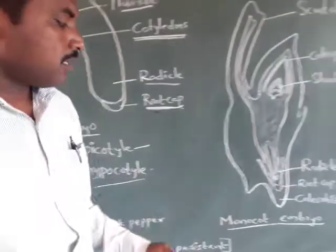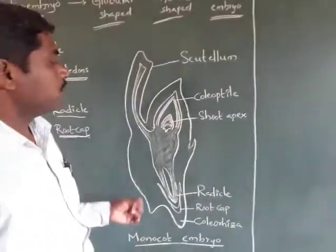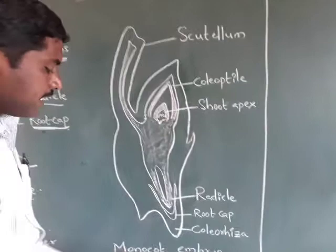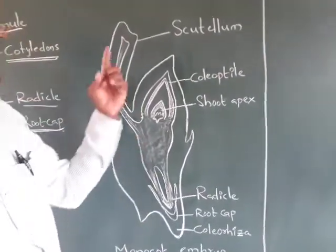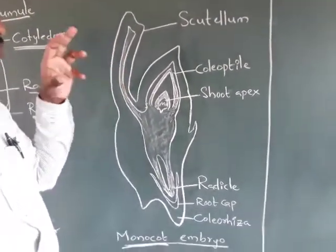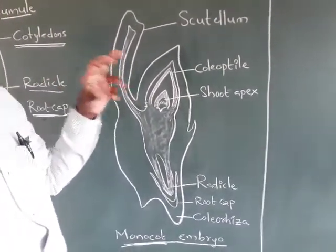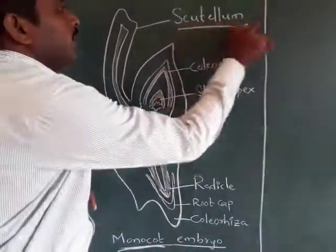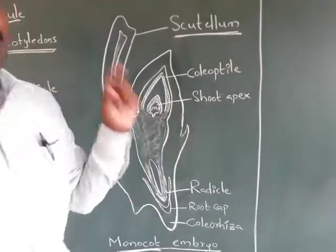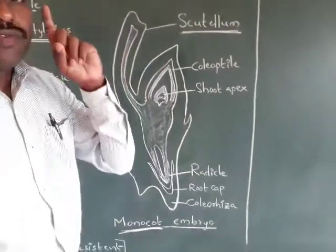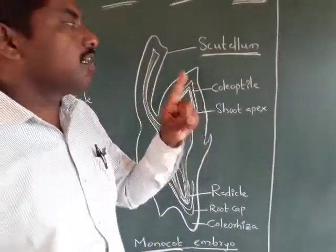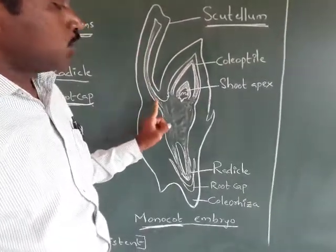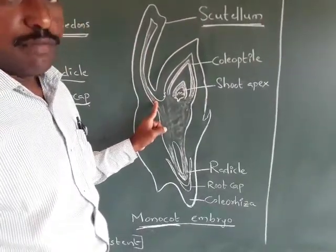Coming to the monocotyledonous embryo — monocotyledonous means a single cotyledon. The monocotyledonous embryo contains a single cotyledon called the scutellum, which is situated at a lateral position of the embryonal axis.